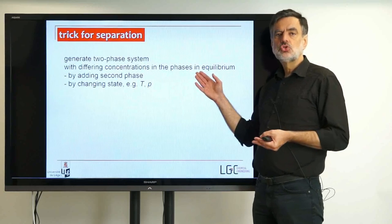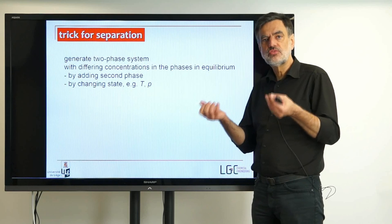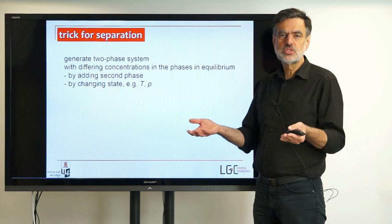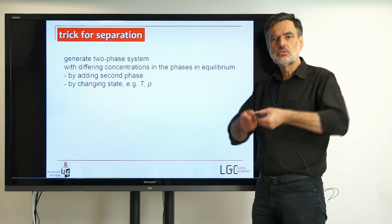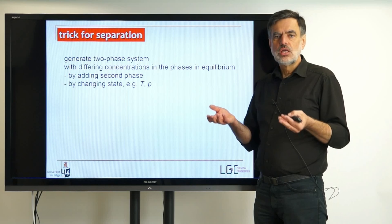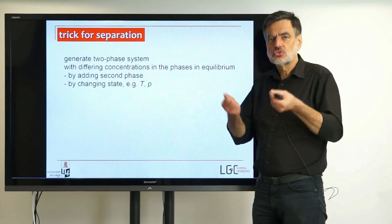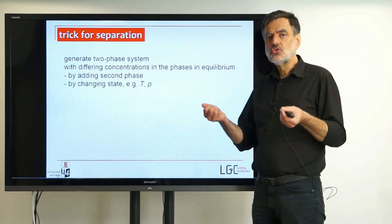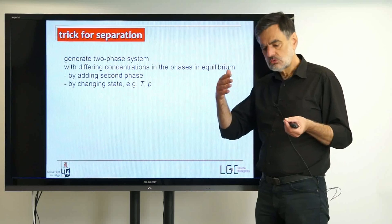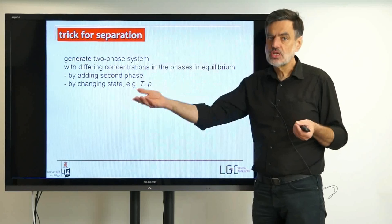We use that to get a certain separation of the components, because if the concentrations of the two phases in equilibrium differ, that means one of the components is enriched in one of the phases, and another component is enriched in the other phase, and that allows a certain separation. Just one of these equilibria does not give you a very high concentration — you get a certain separation between components. So if you want to reach very high purity, you have to repeat that step, reaching equilibrium after equilibrium, applying many of these equilibrium steps in order to get to the pure components.